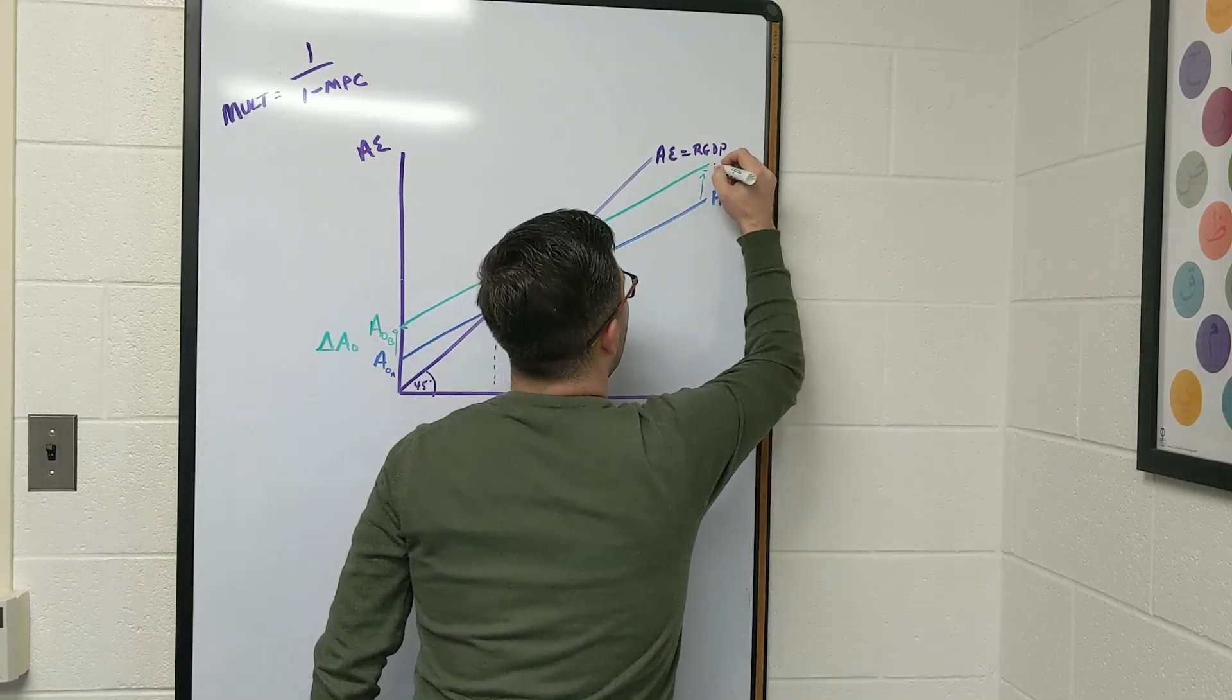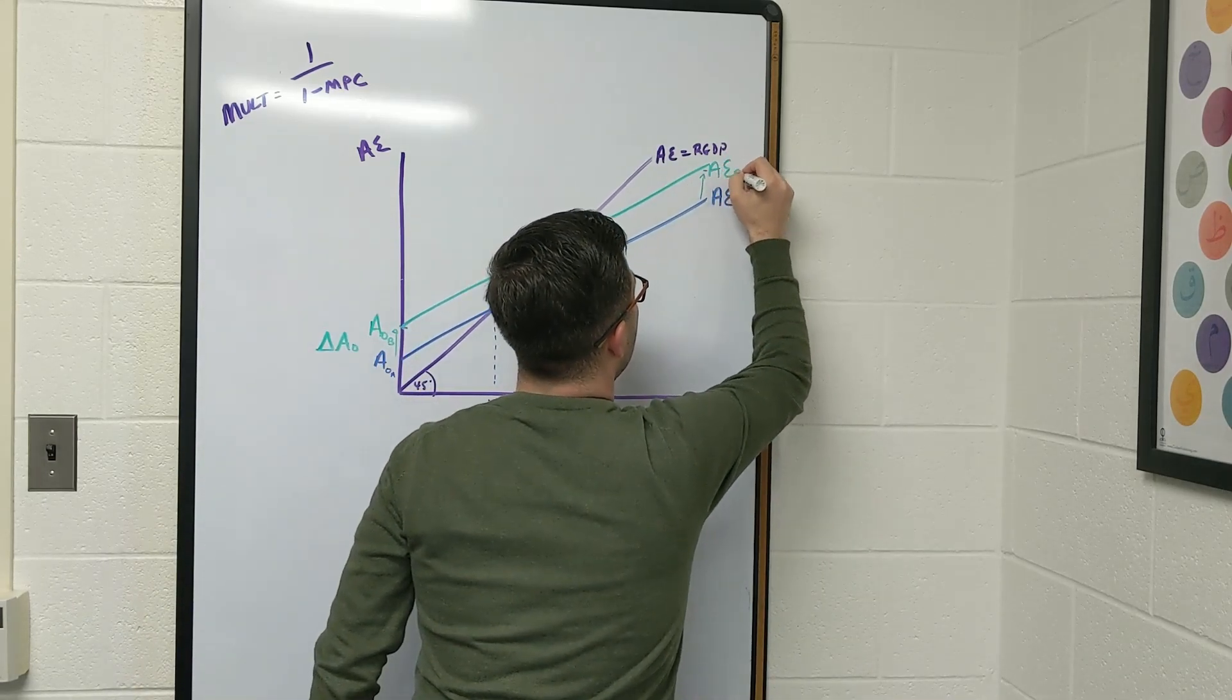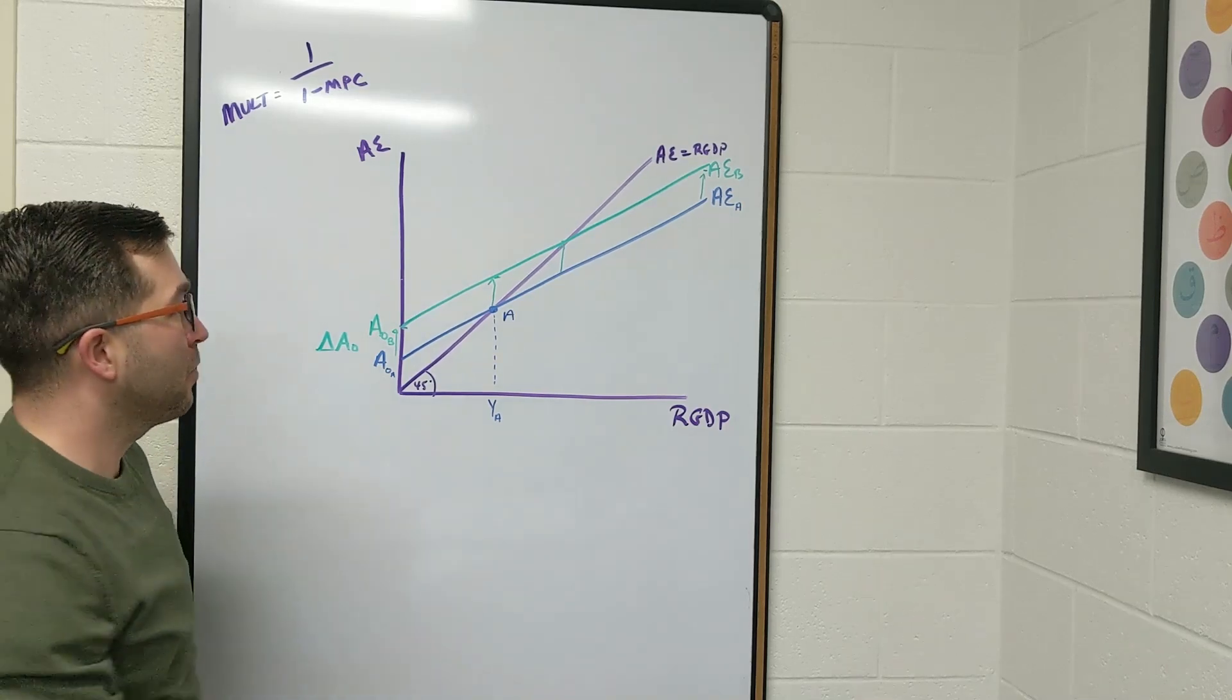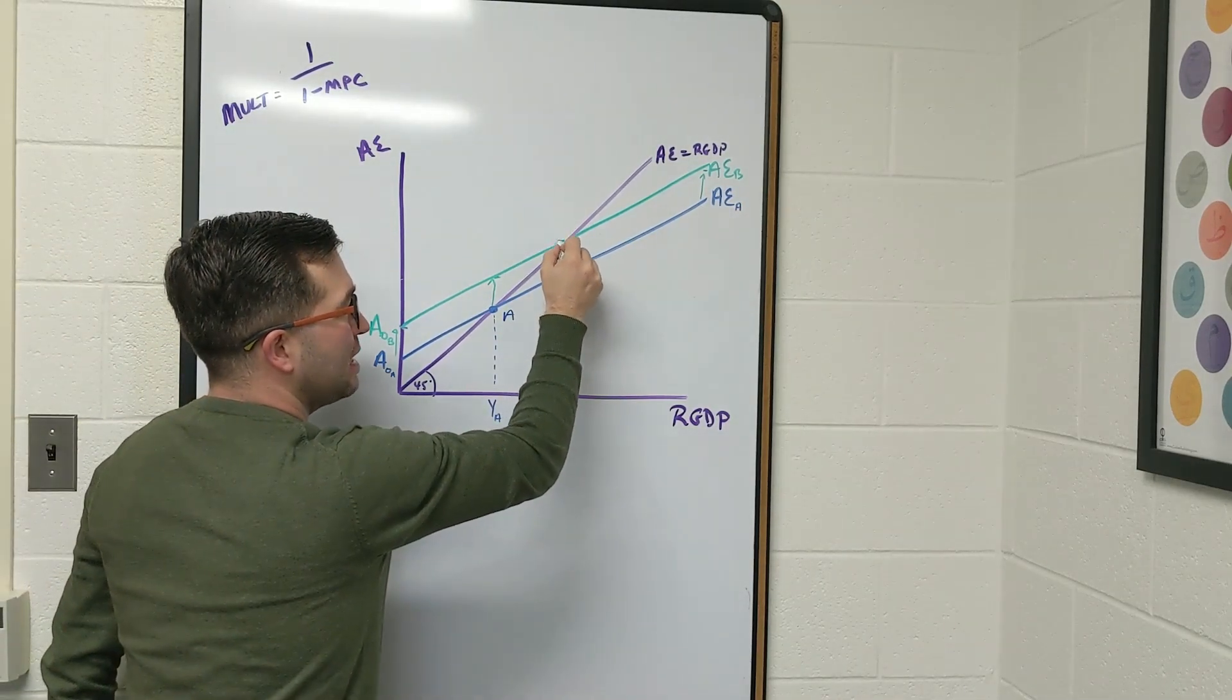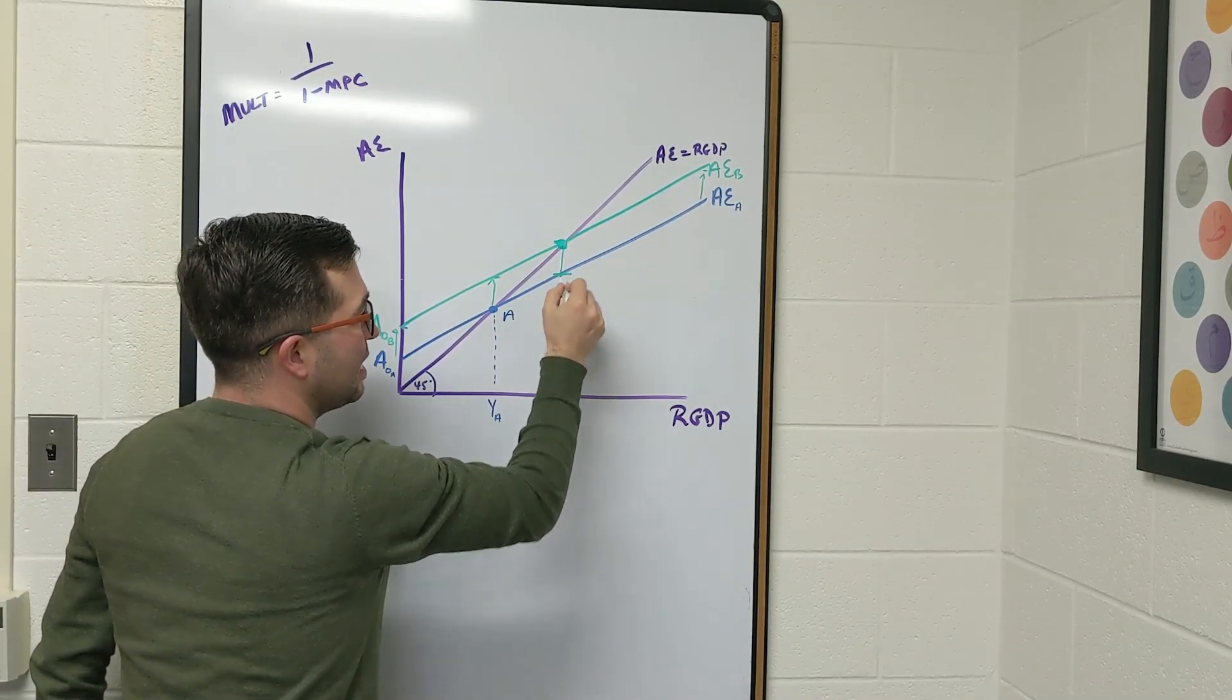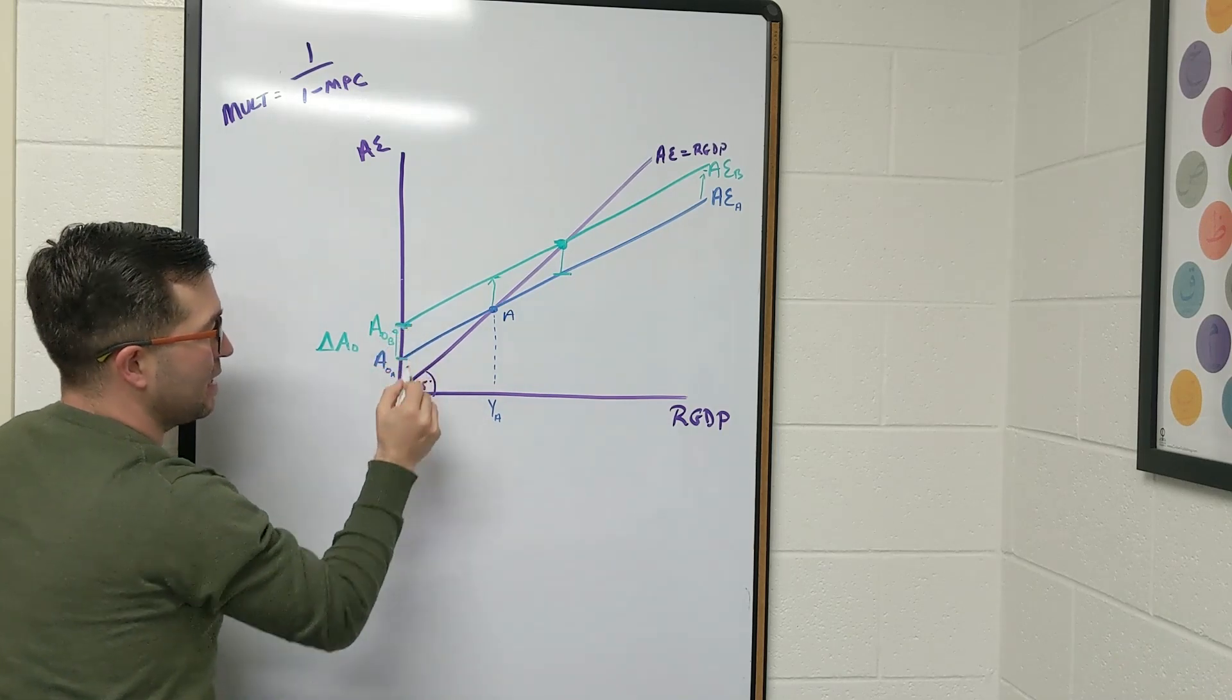So that's our second line. What do we notice? It crosses here because we said this distance is the same as this distance.